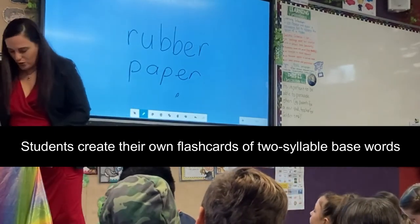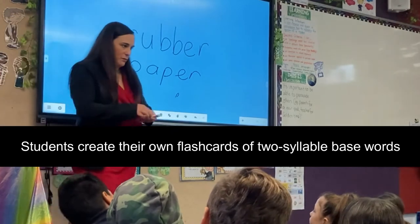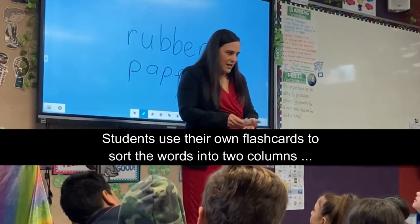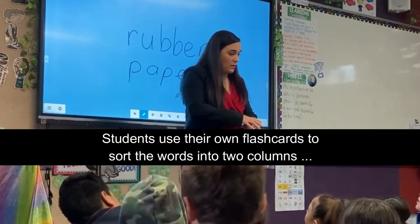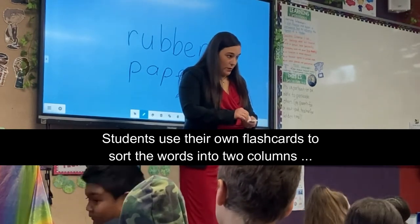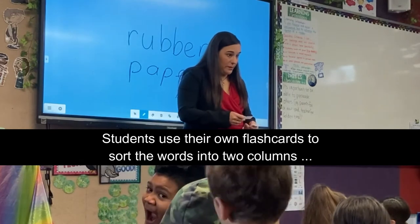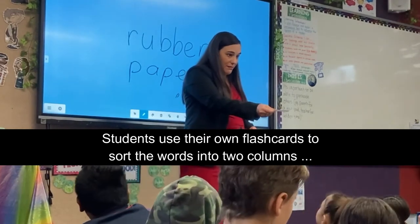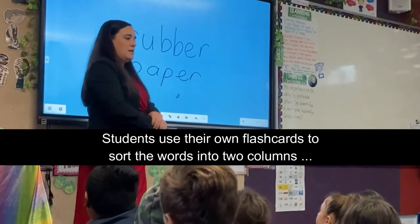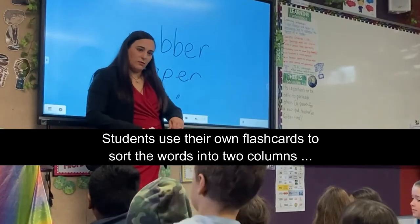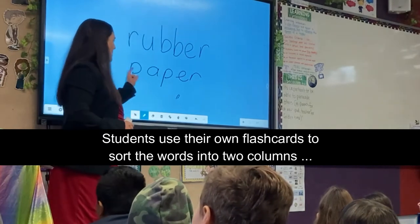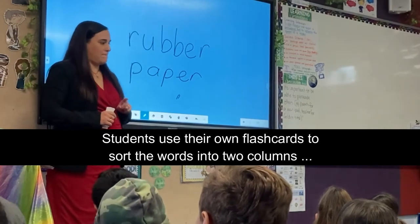When you've got all your words written down on the pieces of paper, you can shuffle them around. Together with your partner, sort the words into two columns: doubling and not doubling. If I had the word 'rubber', would that be in the doubling column or the not doubling column? Doubling. Yes. And what about 'paper'? Not doubling.